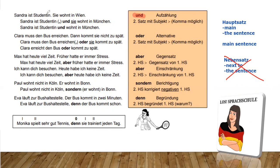We need und for counting information. For example: Sandra ist Studentin. Sie wohnt in Wien. Sandra is a student, she lives in Vienna. Now we can say: Sandra ist Studentin, und sie wohnt in München. Or we can say: Sandra ist Studentin und wohnt in München. The rule here is that the second main sentence also has a subject, and this makes a comma optional. But if the subject is the same, you can cut it off — we don't need it twice — and then the comma is not necessary.